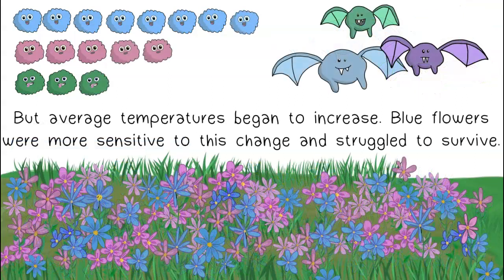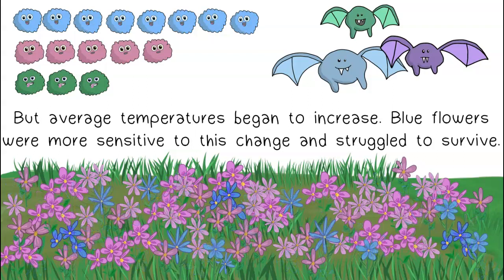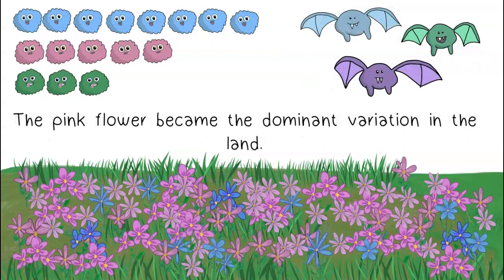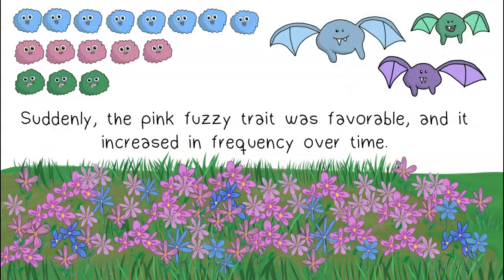But average temperatures began to increase. Blue flowers were more sensitive to this change and struggled to survive. The pink flower became the dominant variation in the land. Suddenly, the pink fuzzy trait was favorable, and it increased in frequency over time.